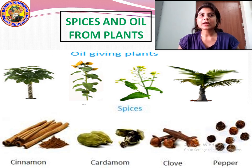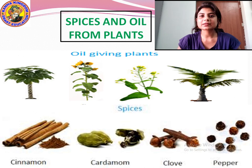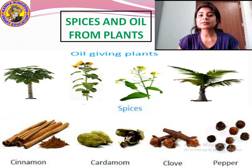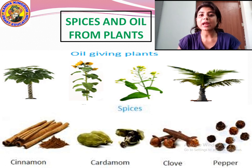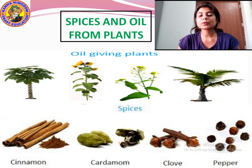Now let us study the spices and oil we get from plants. The oil into which your mother cooks food is obtained from plants — like mustard oil and coconut oil. Spices are the masalas you add to get flavor in your food. Some spices from plants are cinnamon, cardamom, clove and pepper.